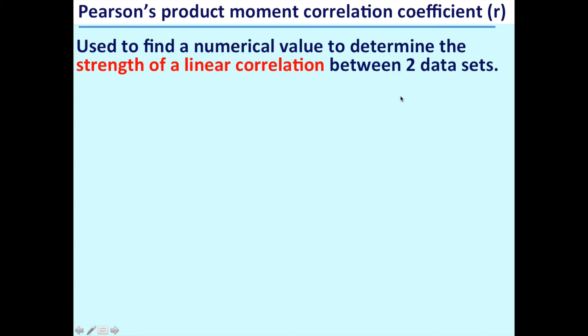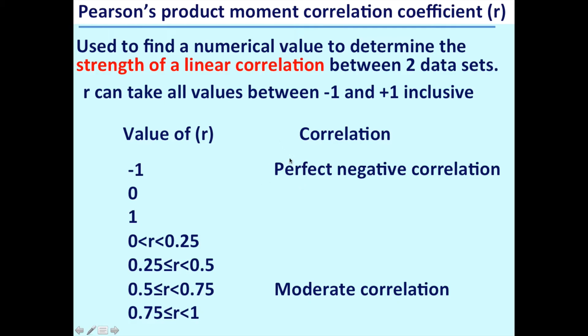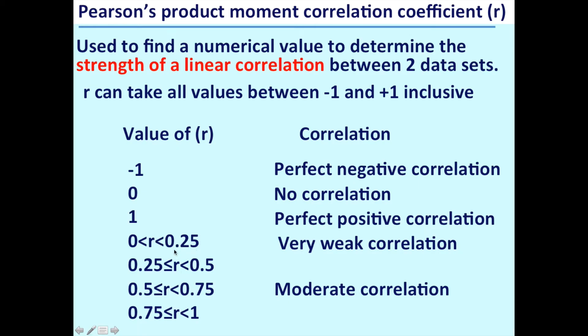The next thing we're going to look at is Pearson's product moment correlation coefficient. This is used to find a numerical value to determine the strength of a linear correlation between two data sets. Again, last time we looked at the concept of correlation - positive and negative correlation, and indeed strong and weak correlation - but it wasn't especially mathematical. So today we're going to try and put some numbers on it using something called Pearson's product moment correlation coefficient, denoted r. We'll go through the theory of it, but realistically in the exam you're going to be using your calculator to find this. First of all, r can take all values between negative 1 and positive 1.